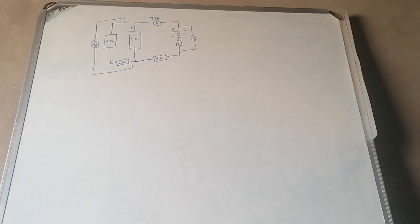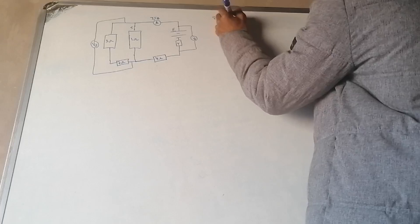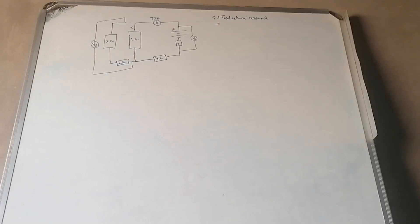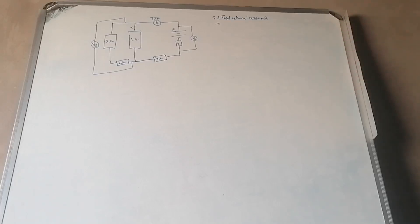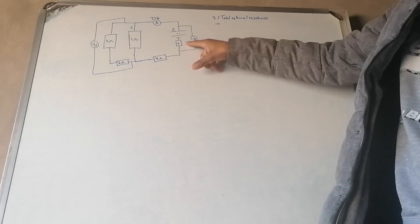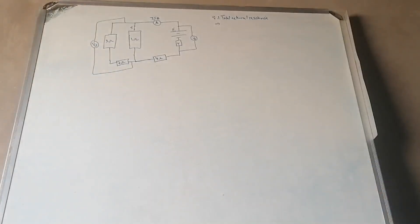In 8.2, switch S is closed and the reading on the ammeter is 3.5 A. In 8.2.1 they ask: calculate the total external resistance of the circuit. If you watched my first Grade 12 tutorial on electrical circuits, I explained what happens to internal and external resistances. The external resistance is anything outside the battery; the internal resistance is inside the battery.